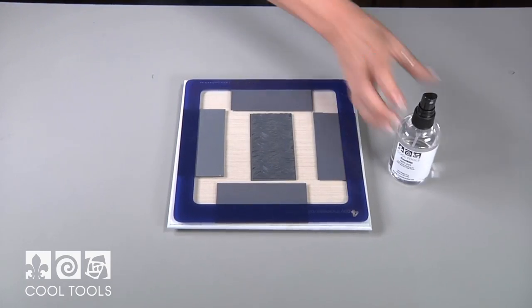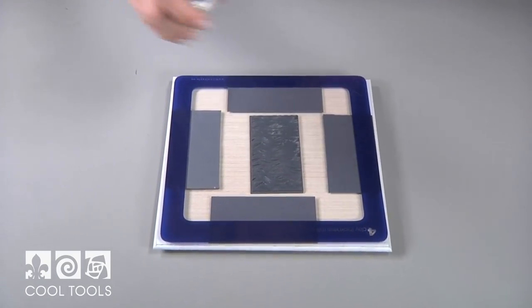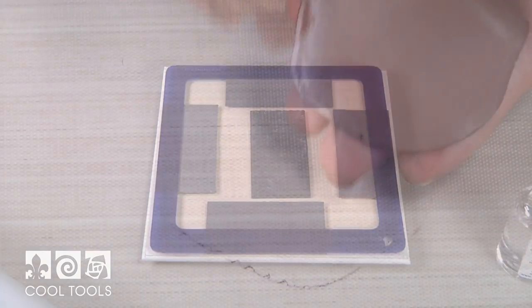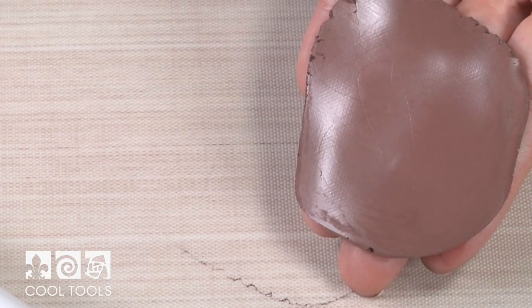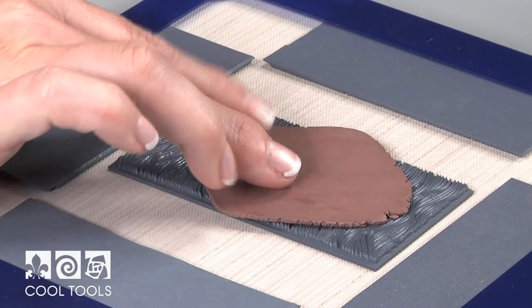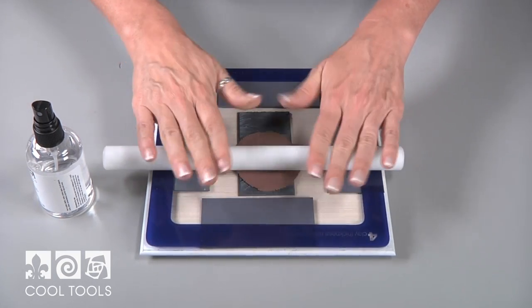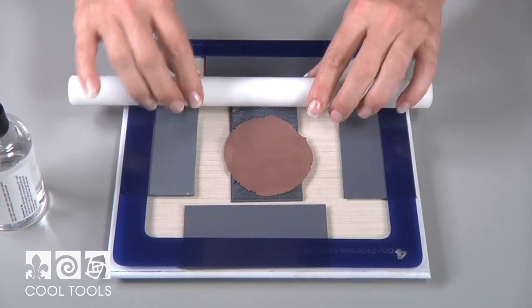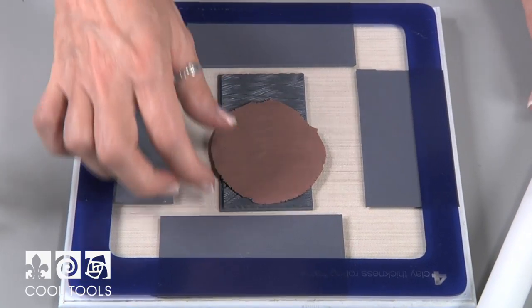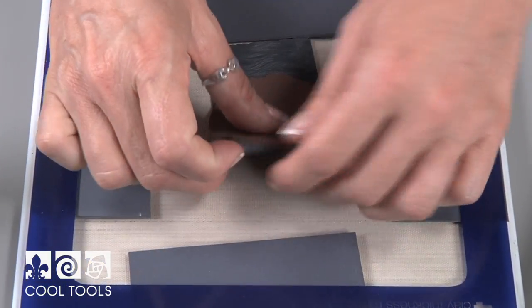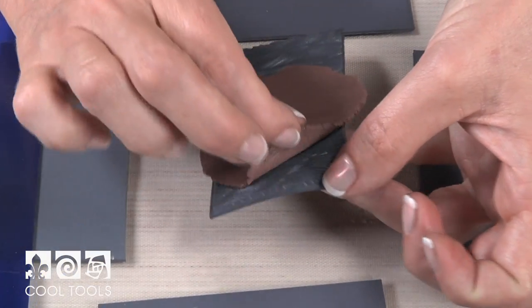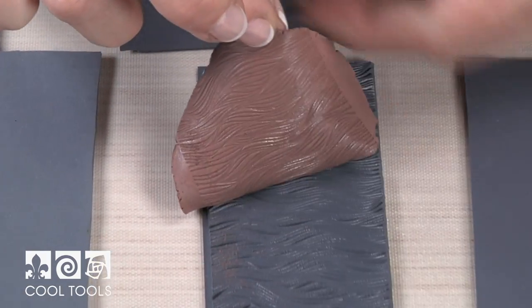Lay the texture on the work surface and spray with cool slip to keep the clay from sticking. Using the smoothest side of the rolled out clay, place gently on the texture tile. Using a number four rolling frame, roll from the center out for best results. Carefully remove the clay from the texture.